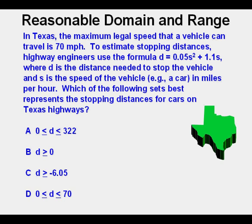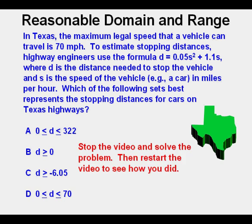where D is the distance needed to stop the vehicle and S is the speed of the vehicle, that is a car, in miles per hour. Which of the following sets best represents the stopping distances for cars on Texas highways? Stop the video and solve the problem. Then restart the video to see how you did.